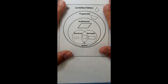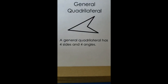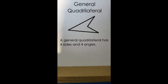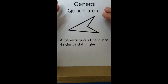I have a much easier way for you. The first type of quadrilateral is called the general quadrilateral. All quadrilaterals fall into this category because a general quadrilateral simply has four sides and four angles — very simple.